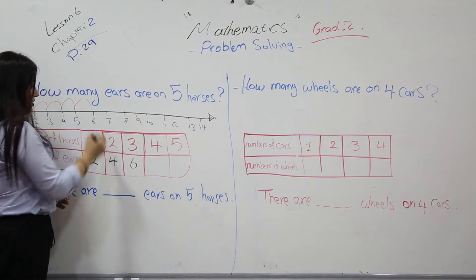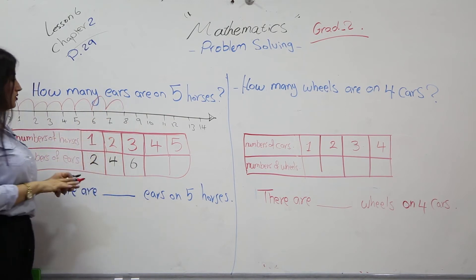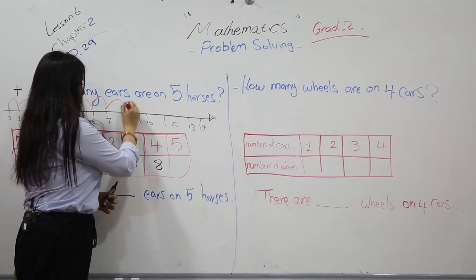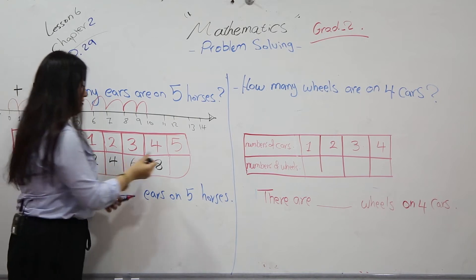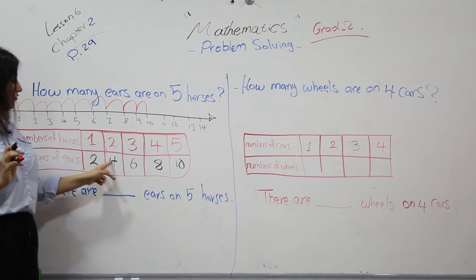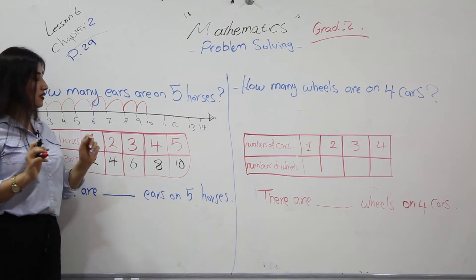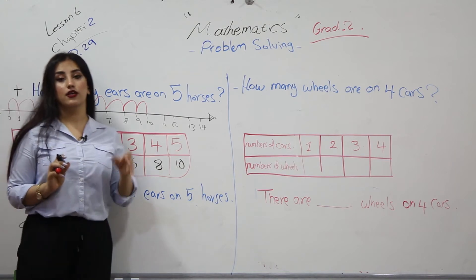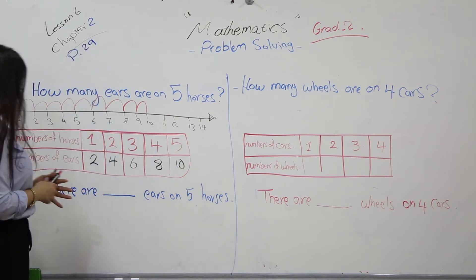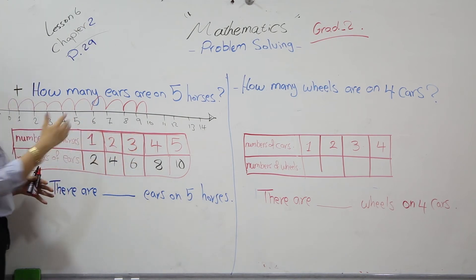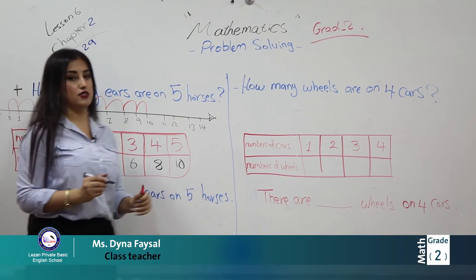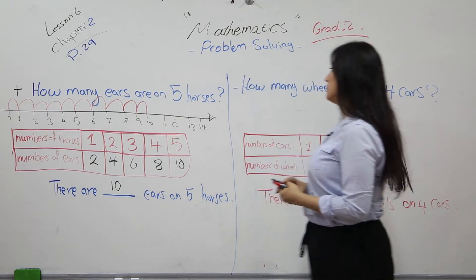If you add one more to get four horses, we jump again — one, two — we stop on eight. And if you add one more horse, we jump two times again and end on ten. So: one horse has two ears, two horses four ears, three horses six, four horses eight, and five horses ten ears. There are ten ears for five horses.